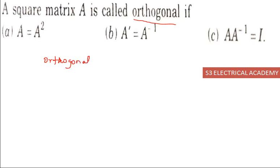If a matrix is said to be orthogonal, then A transpose should be equal to A inverse. The second condition is A into A transpose is equal to I.